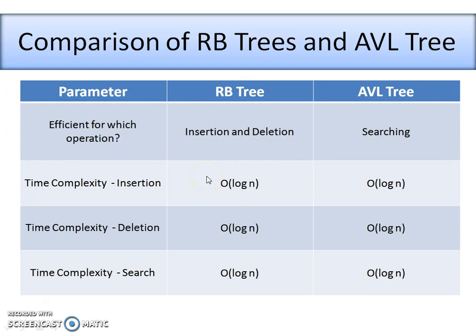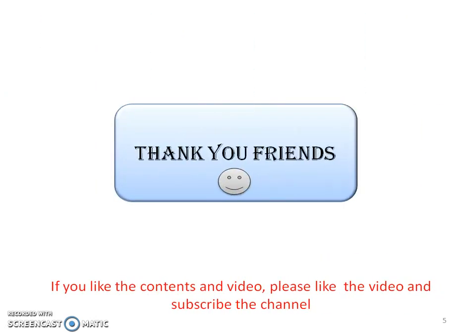The time complexities for insertion, deletion, and search operations are the same in both trees — O(log n) for all three operations in both Red-Black trees and AVL trees. Thank you dear friends for watching. If you like the contents of the video, please like the video and subscribe the channel. Thank you.